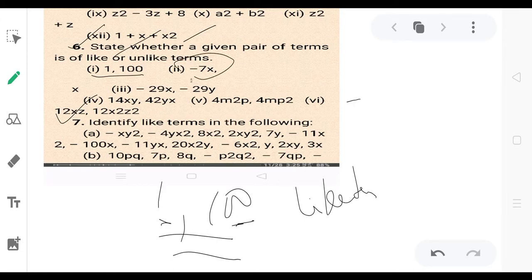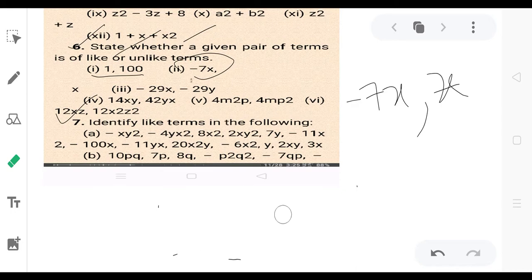Question number 2 is -7x and x. Both terms have the same variable, both are power 1. So these are like terms.